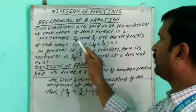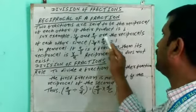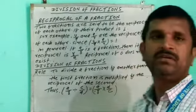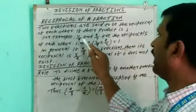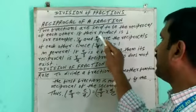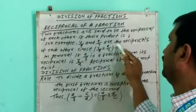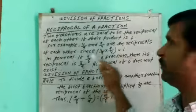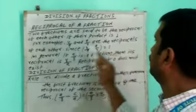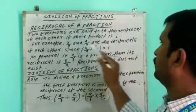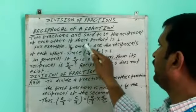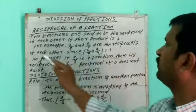For example, 4/9 and 9/4 are their reciprocals. So, 4/9 and 9/4 are the reciprocals of each other.